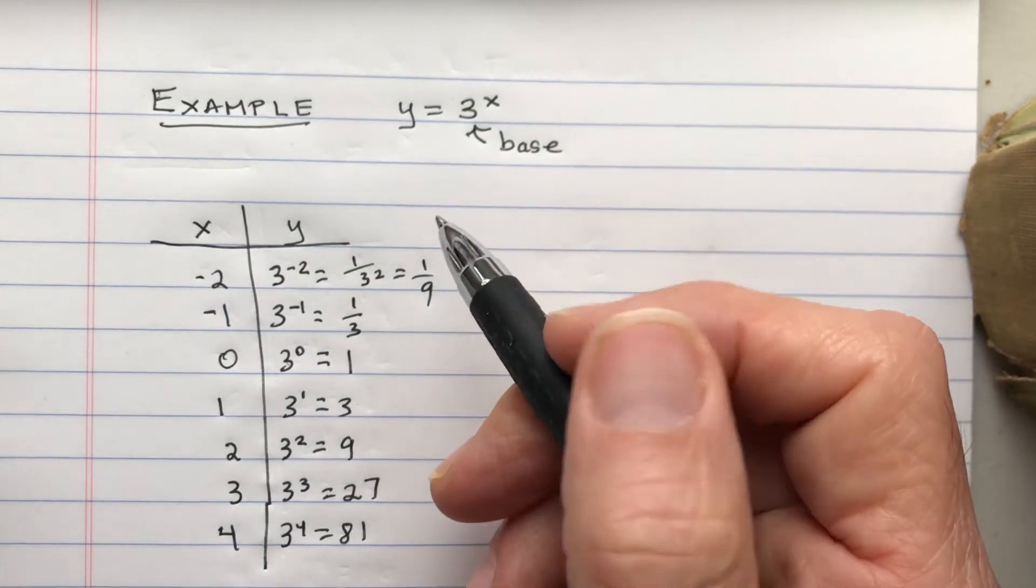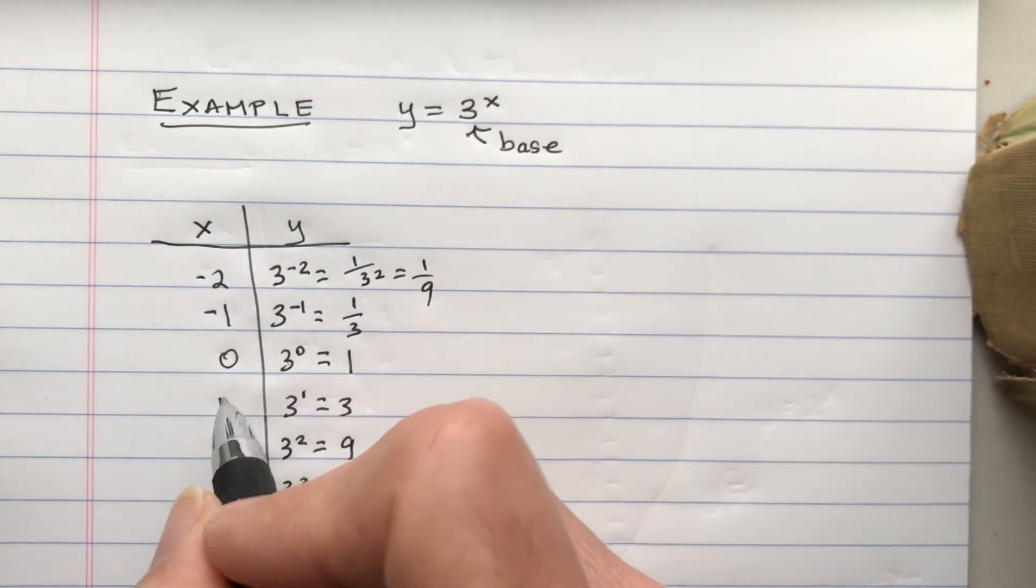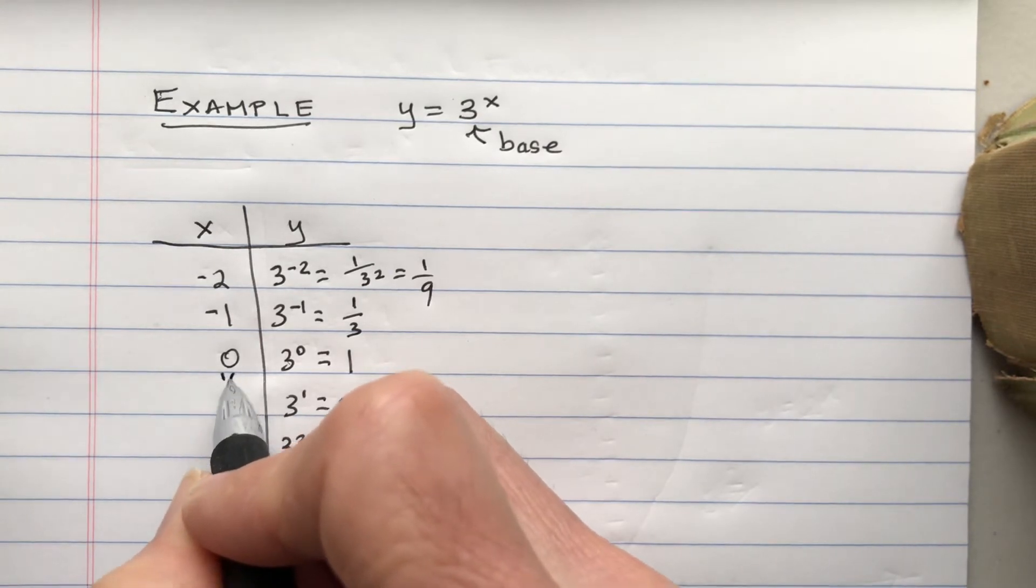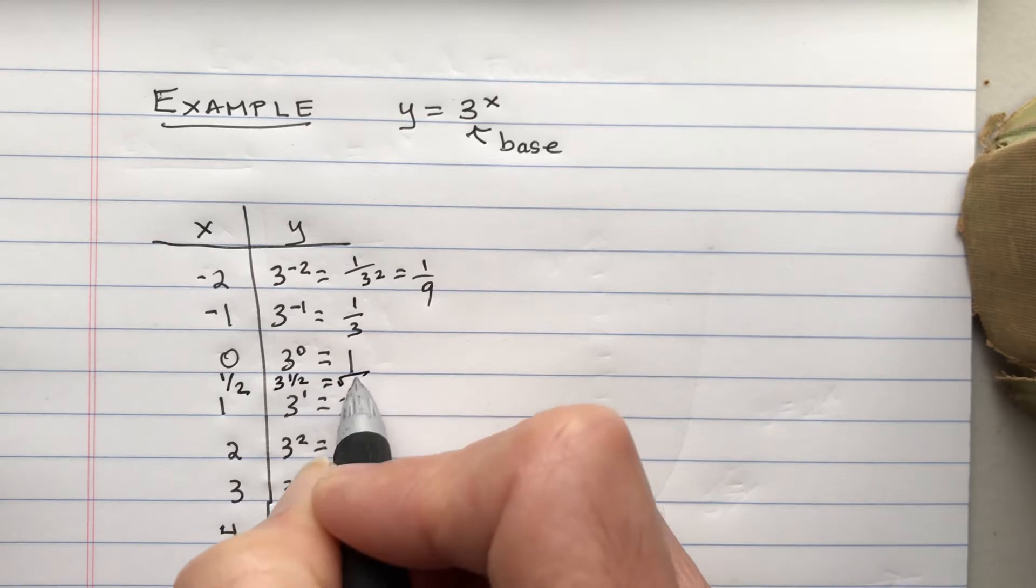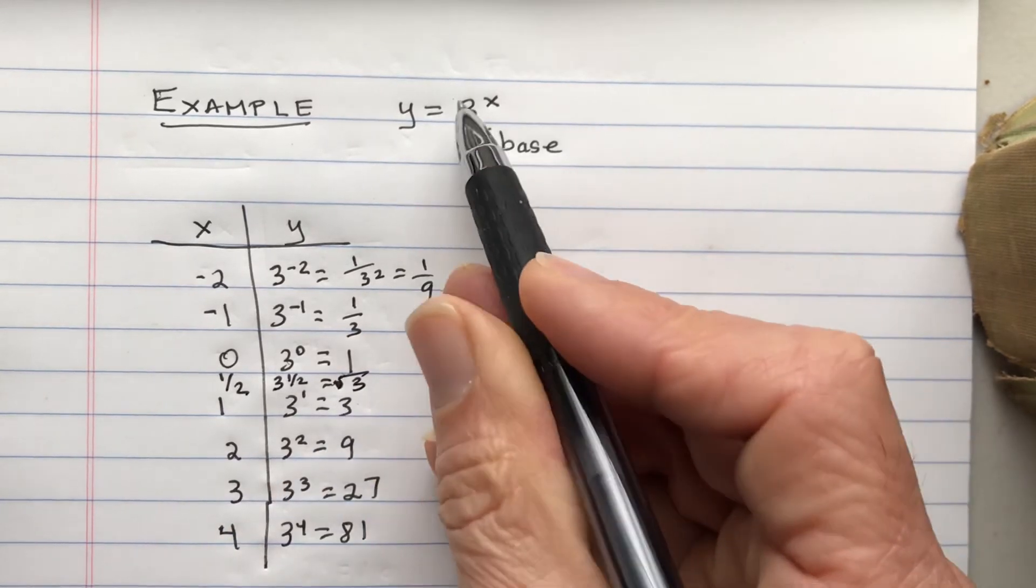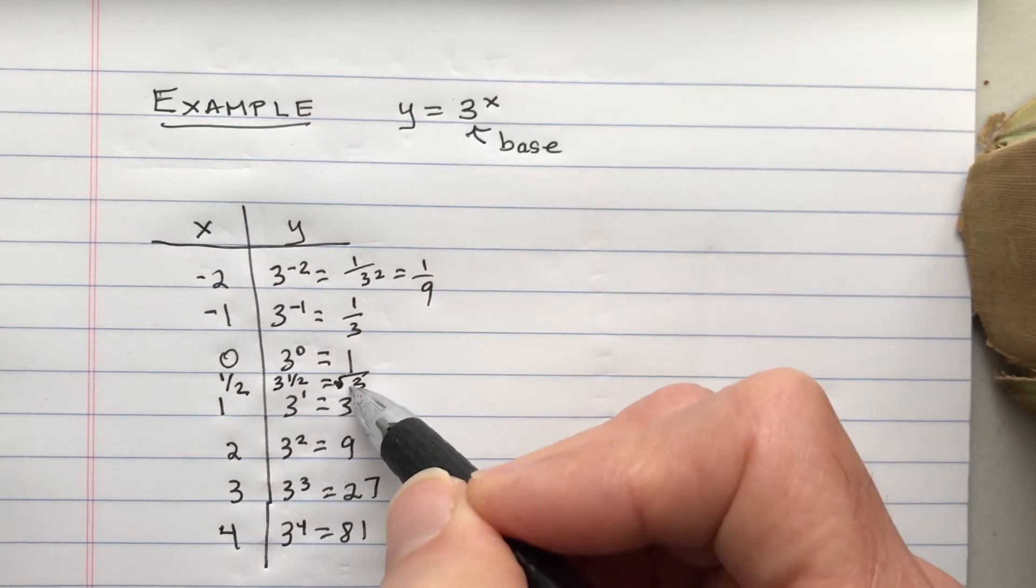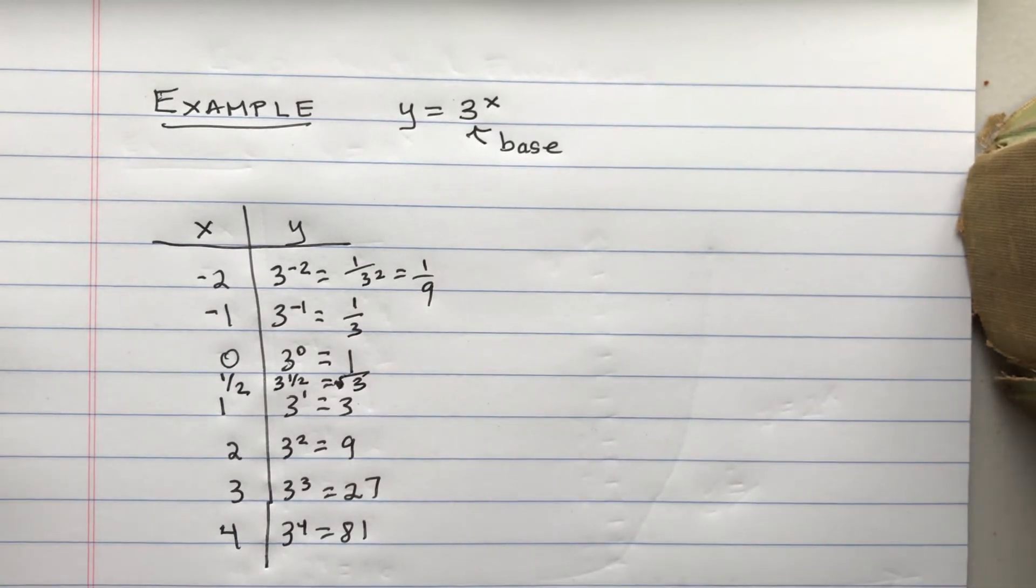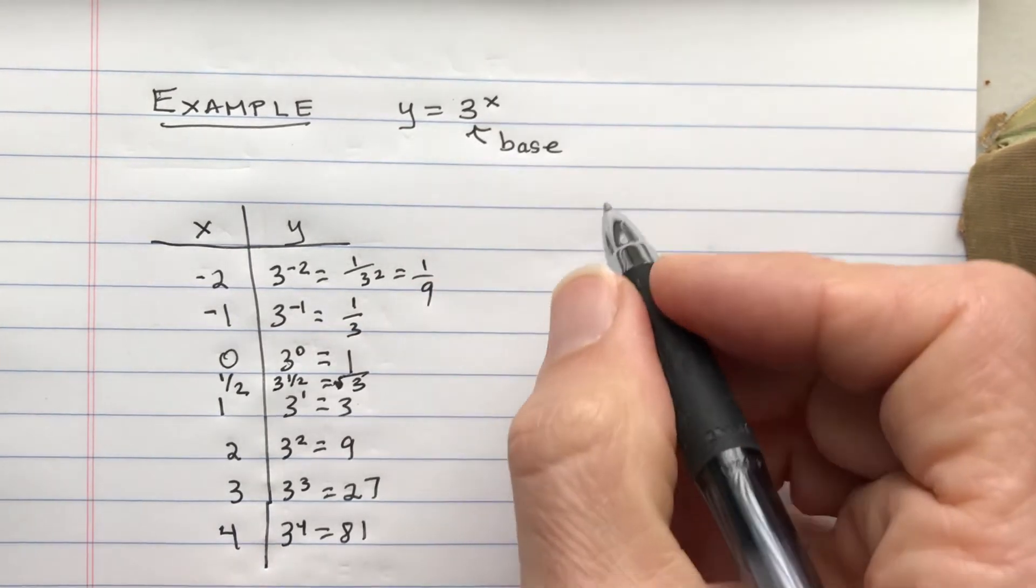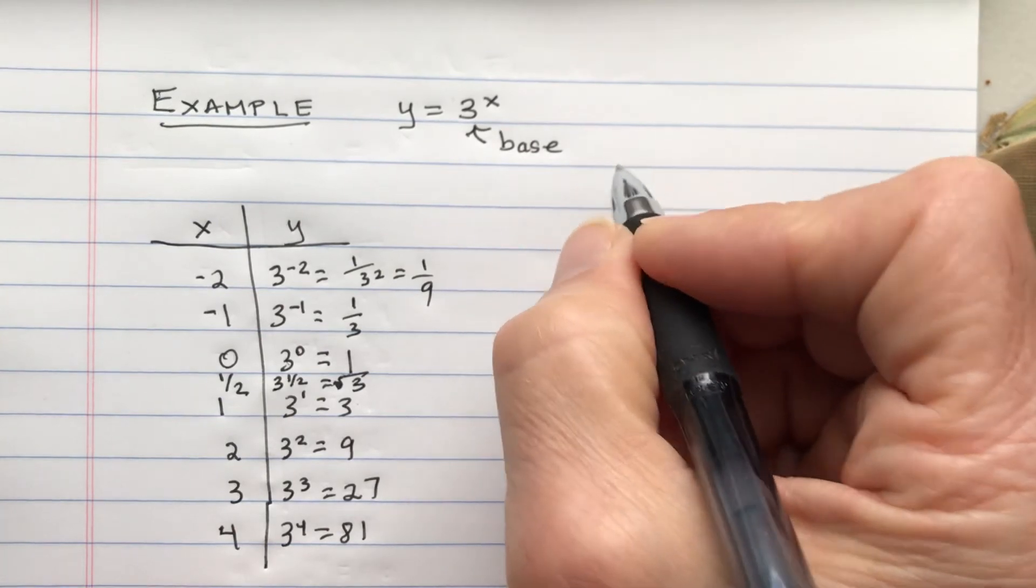We don't want it to be negative because, for example, there is in between here say 1 half and you have 3 to the 1 half power, which is the square root of 3. And so we don't want to put in a negative number because we don't want to take the square root of negative 3. It's not a real number. So we always want the base to be positive.